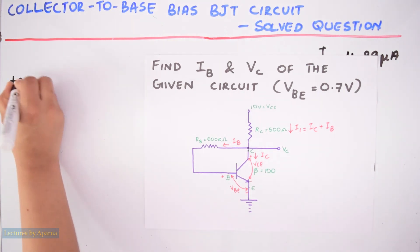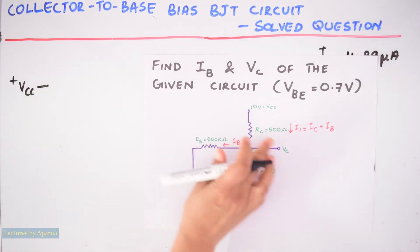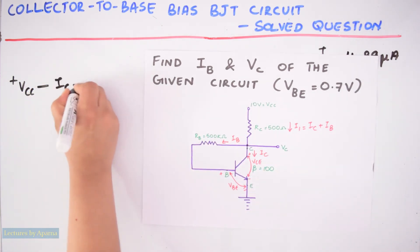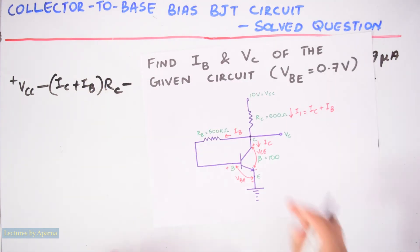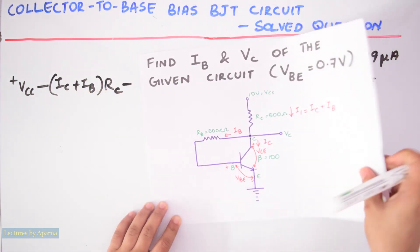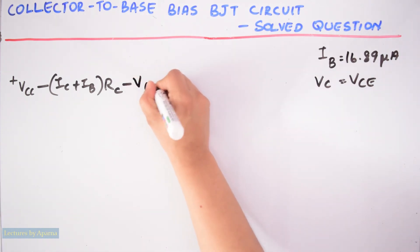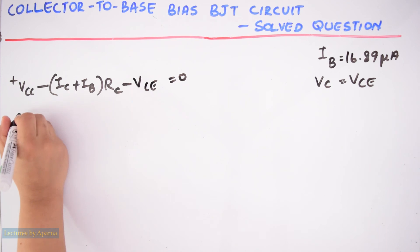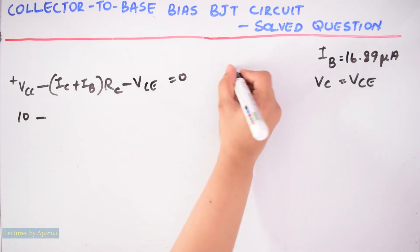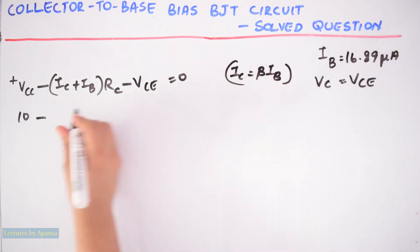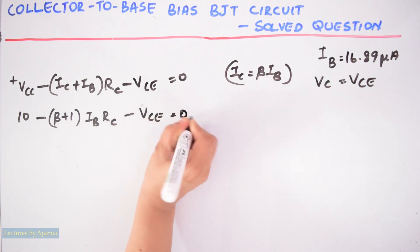Analyzing the output section, we can write it as using Kirchhoff's voltage law, we are going to write the loop equation. So it will be plus VCC minus (IC plus IB) into RC minus VCE is equal to 0. Now again substitute the values. VCC is 10 minus (IC is equal to beta IB, so I can write this as beta plus 1 IB) times RC minus VCE is equal to 0.